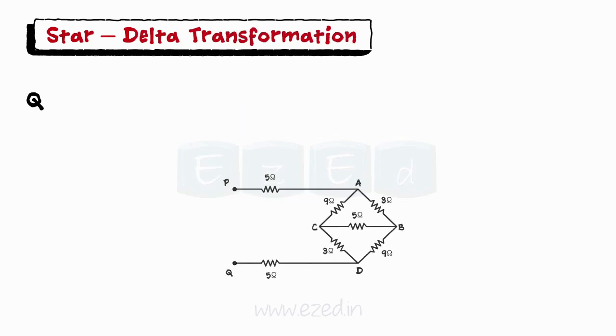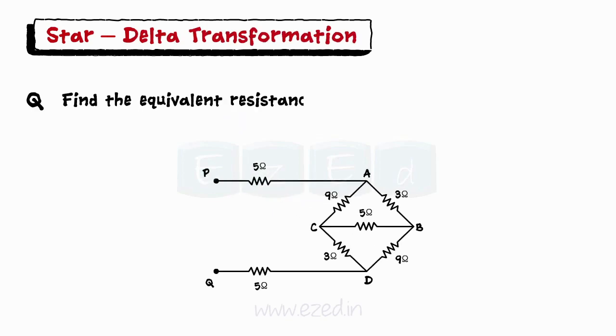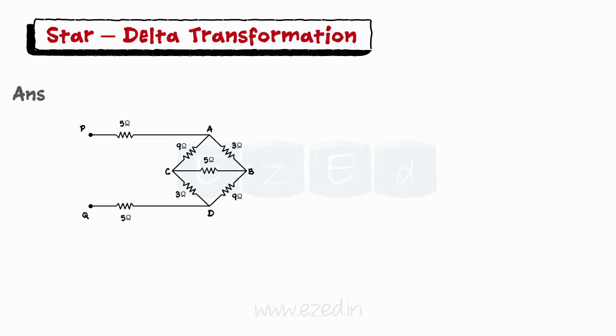Let's illustrate our concept with the help of an example. Find the equivalent resistance between points P and Q in the network as shown in the figure. As we can see, we don't have any direct series or parallel connections. We need to simplify the network using star delta transformations.